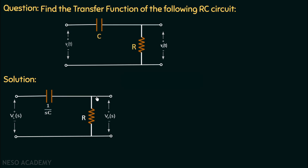Observing the node in this circuit, the output branch is open-circuited so no current flows into it — there are only two active branches: one with the capacitor and one with the resistor. The same current flows through both the capacitor and the resistor, which means they are in series, and in a series circuit the voltage gets divided.